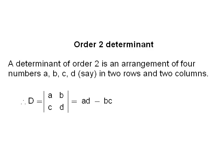A determinant of order 2 is an arrangement of 4 numbers, say A, B, C, D, in 2 rows and 2 columns. The determinant D has elements A, B in the first row and C, D in the second row. The value of this determinant is defined to be AD minus BC. A determinant is usually denoted by a capital letter and its elements are denoted by small letters.